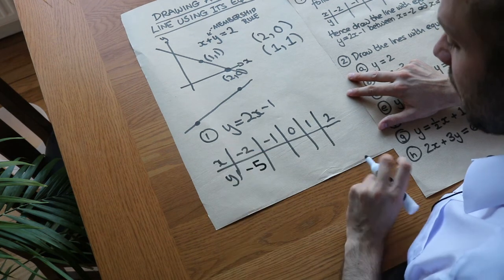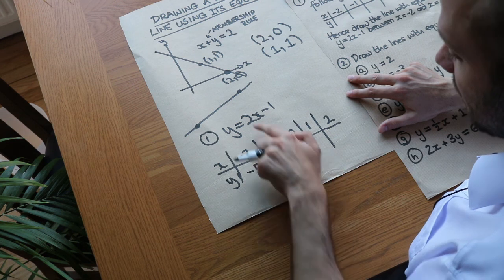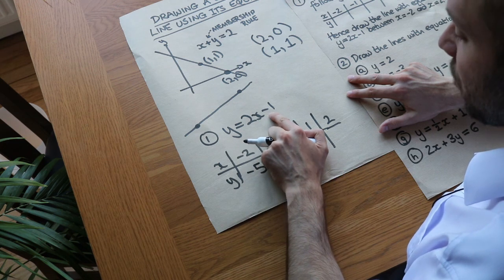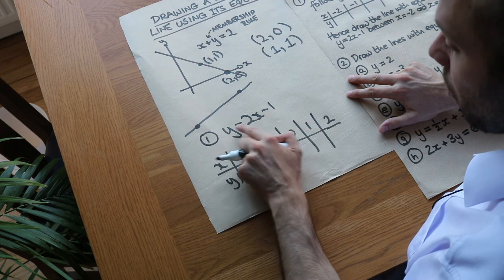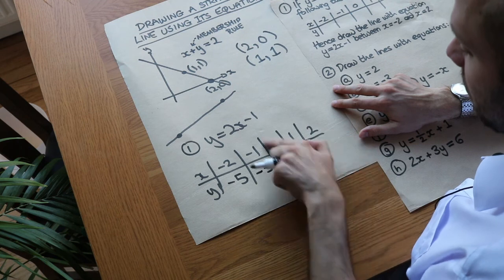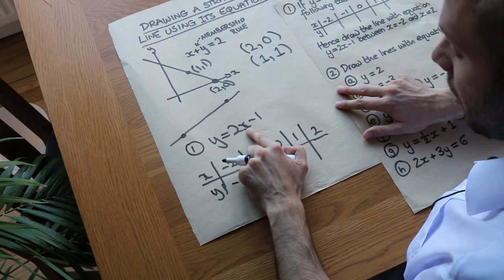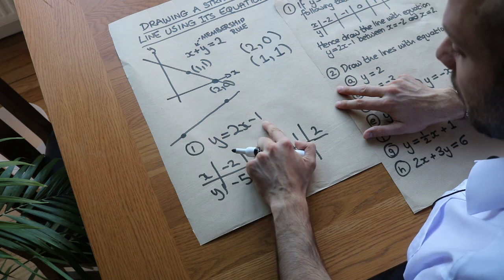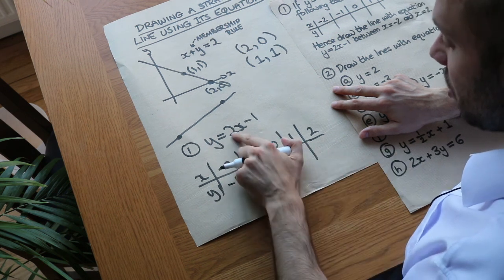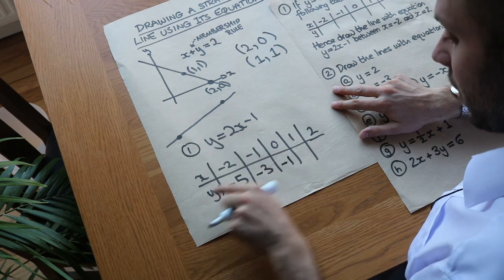If x was minus 1: 2 times minus 1 is minus 2, then subtract 1, that's minus 3 — so y equals minus 3. It's getting easier now with positive values or zero. When x is 0: 2 times 0 is 0, minus 1 gives y equals minus 1. If x is 1: 2 times 1 is 2, subtract 1 gives y equals 1.